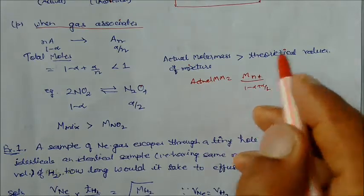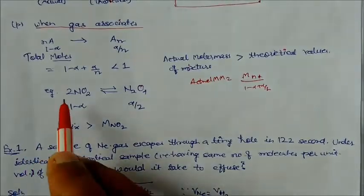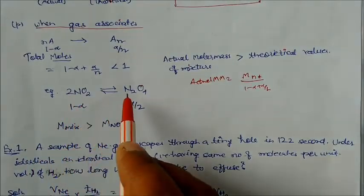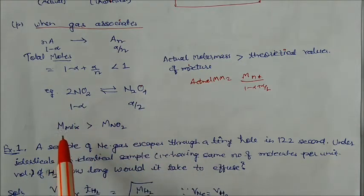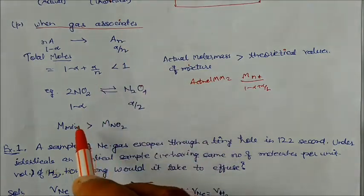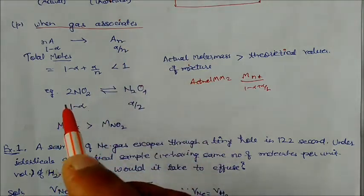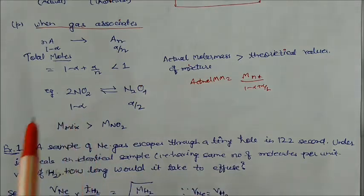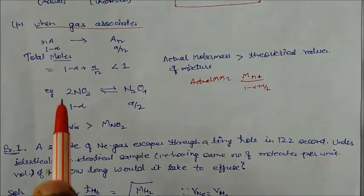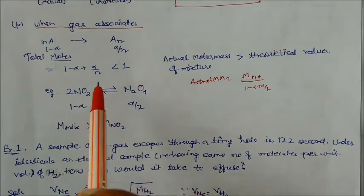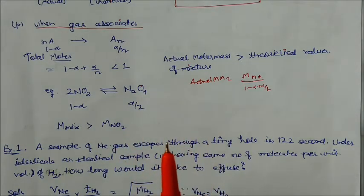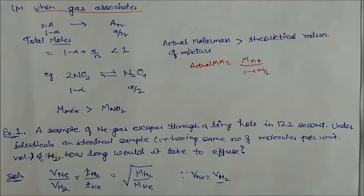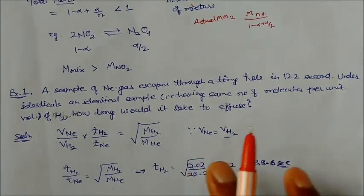Since total moles < 1 in association, the actual molar mass of the mixture increases and is greater than the theoretical value. For example, 2NO2 → N2O4: moles = (1−α) + α/2. So in association, the experimental molar mass increases. In dissociation, the experimental molar mass decreases. Keep this in mind — it is very important.